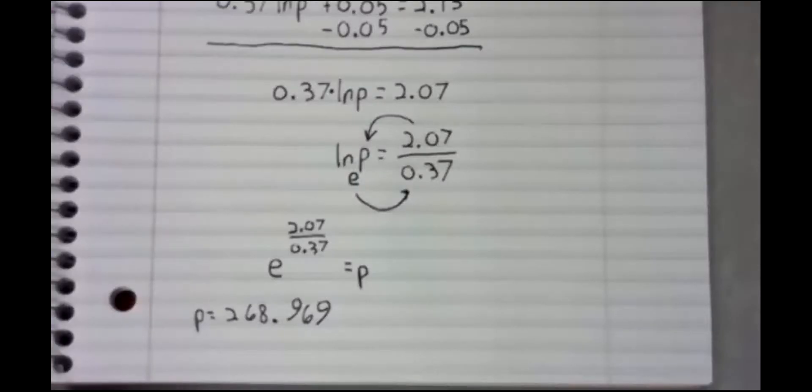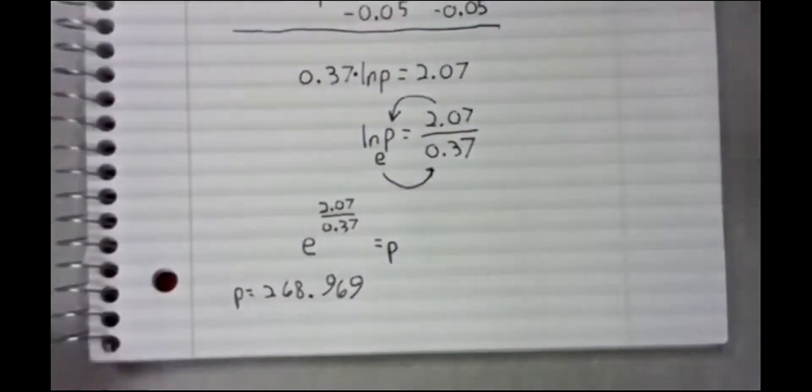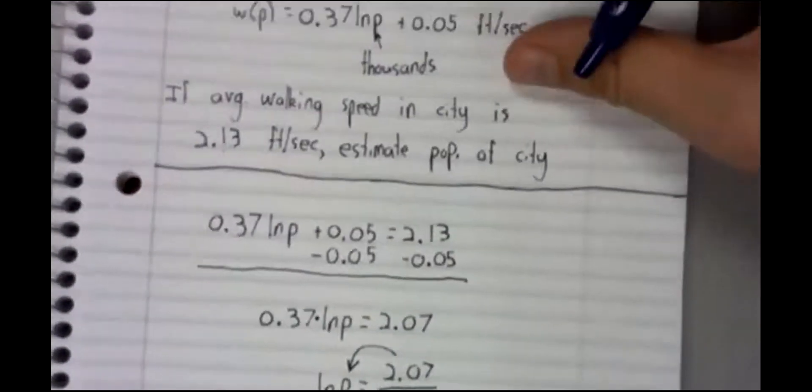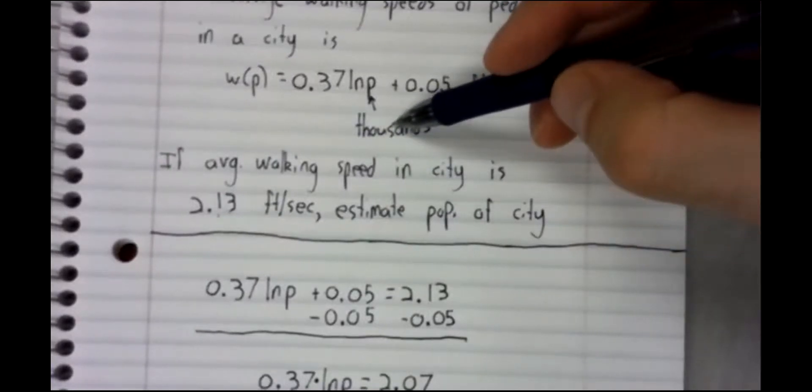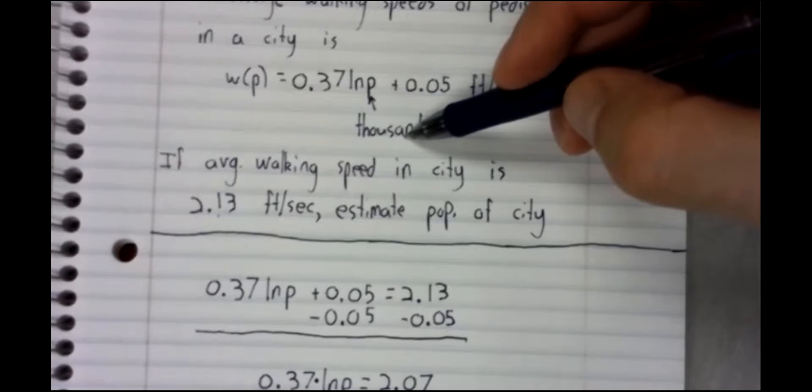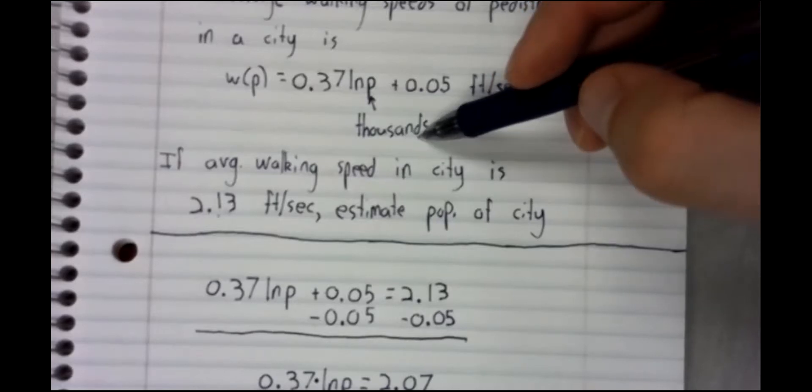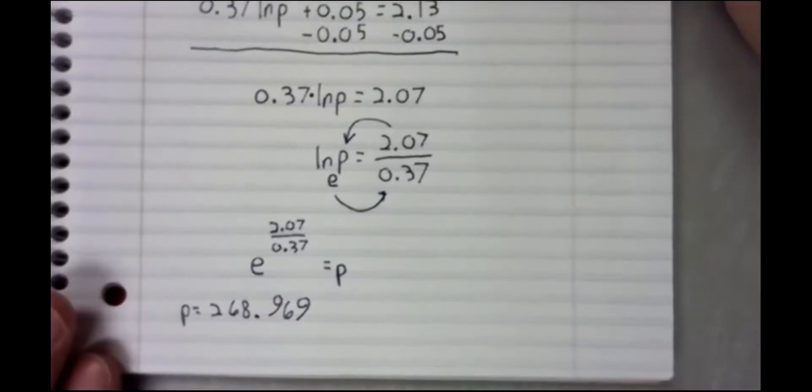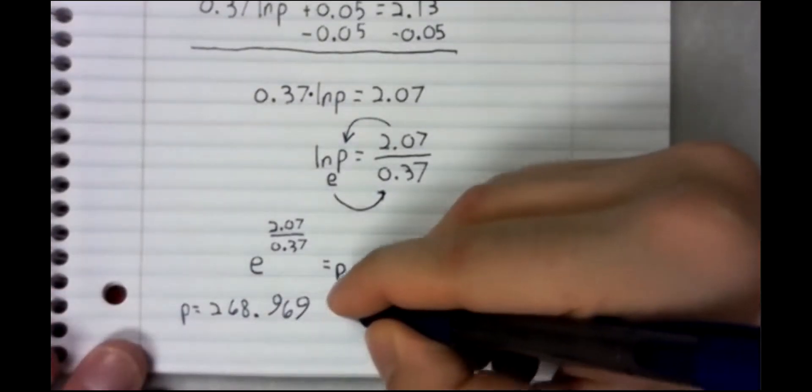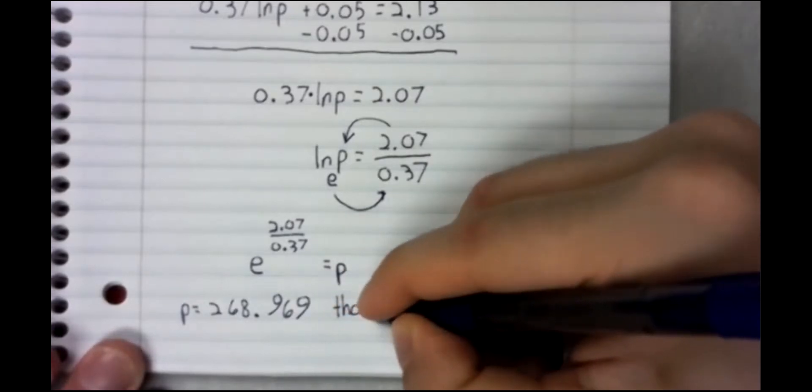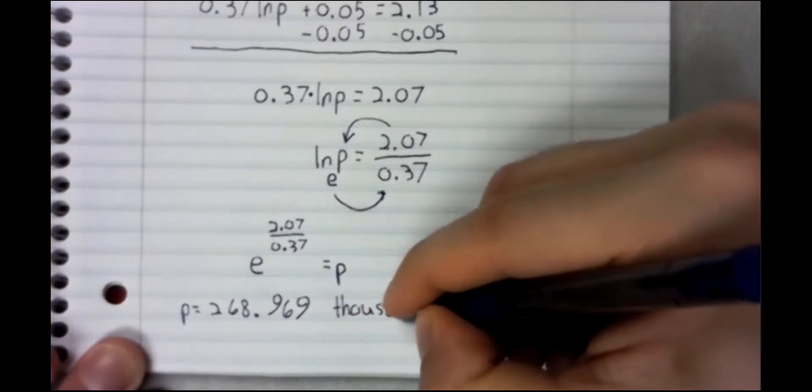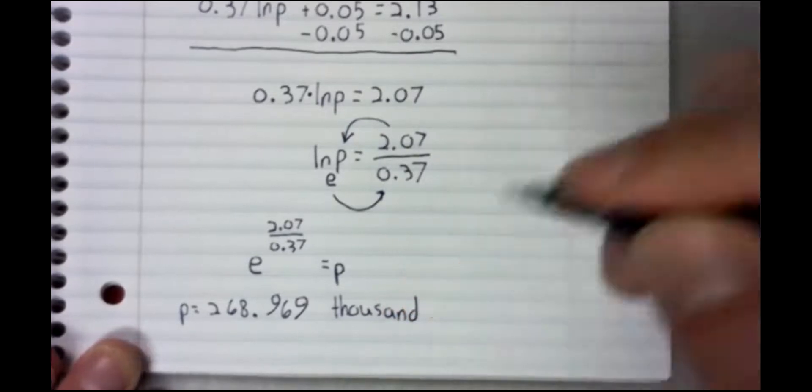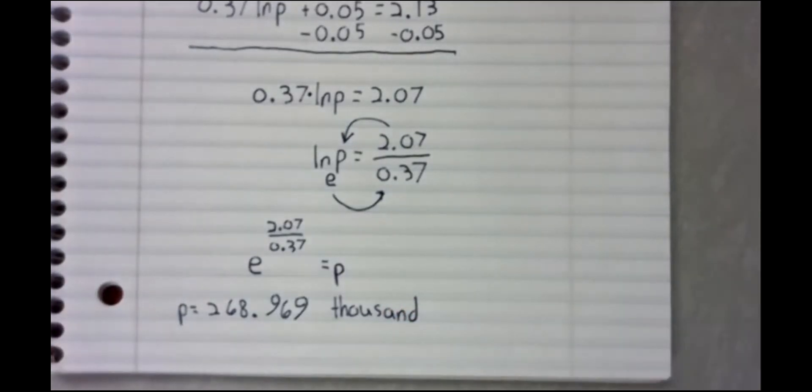That perhaps seems like quite the small city, but remember that this is population measured in thousands. So this is 268,969 thousand people, not 269 people.